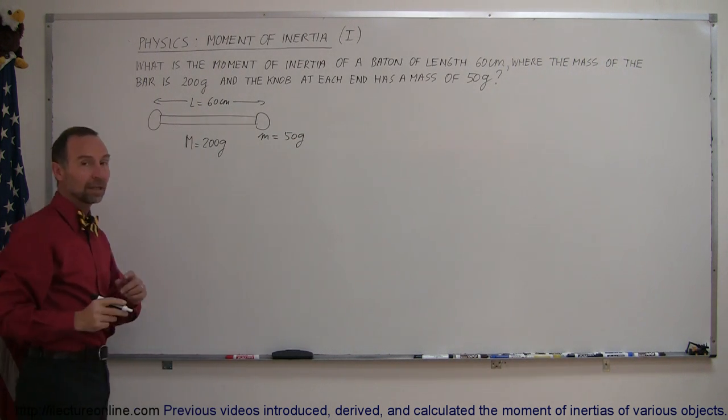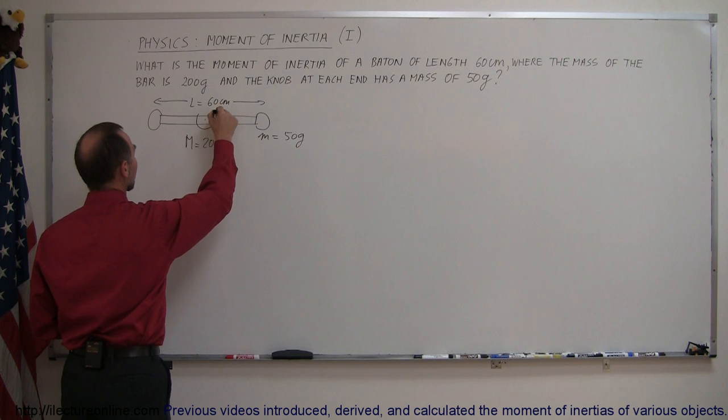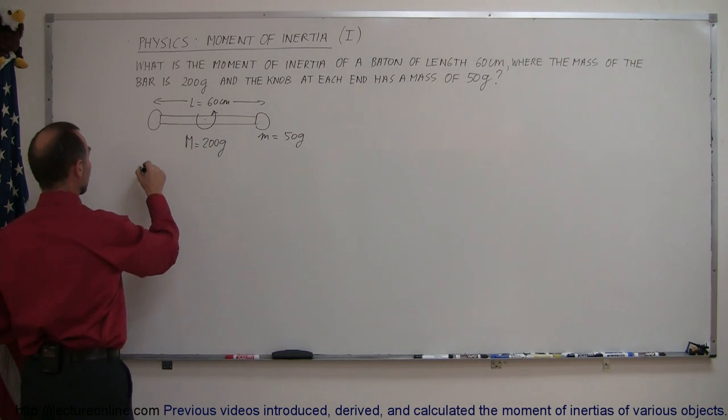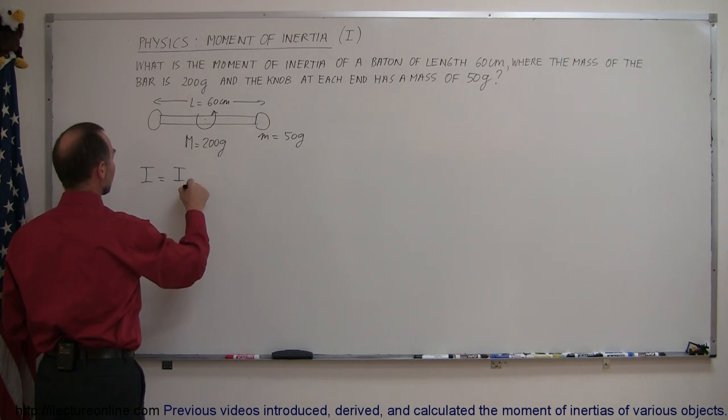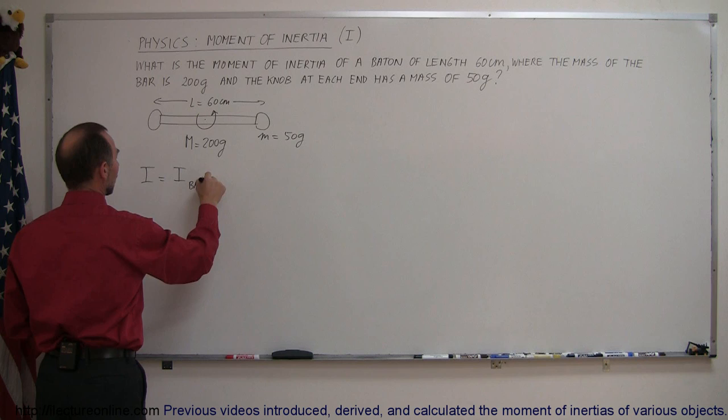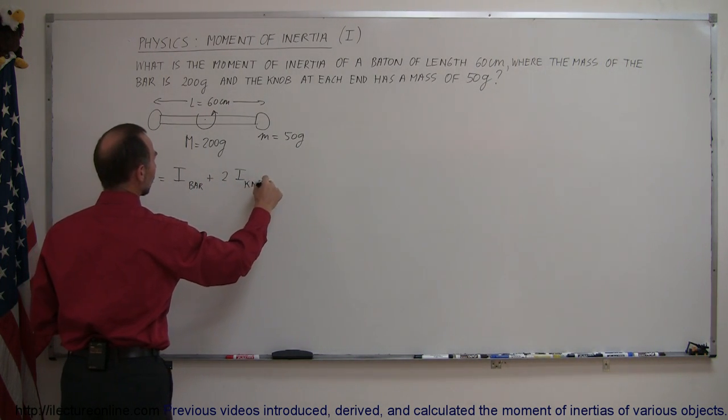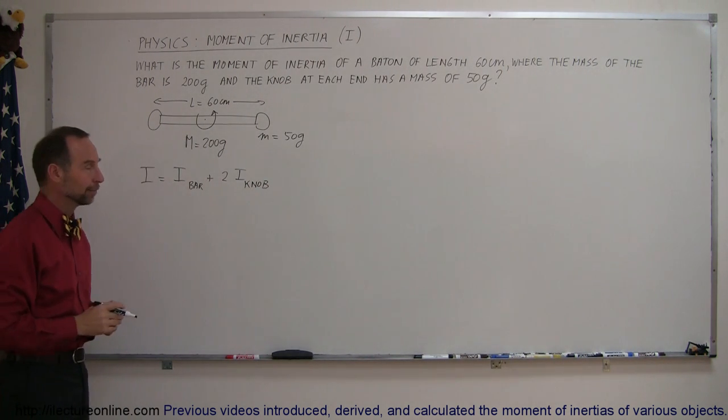So assuming that the baton is twirled about a point at its center like this, what will be the moment of inertia? You can say that the moment of inertia total of this bar is equal to the moment of inertia of the bar plus twice the moment of inertia of each knob. Since there's two of them we'll just multiply the moment of inertia of one times two to get the total.